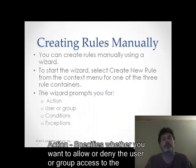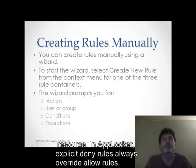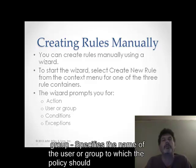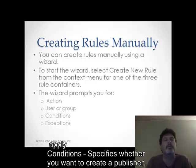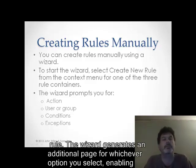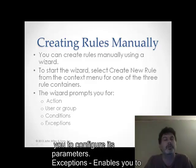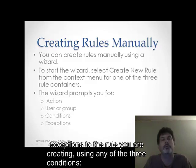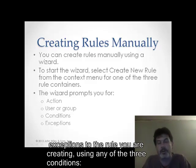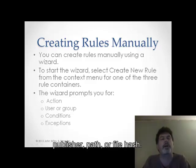You also have the ability to create rules manually using the Create Rules Manually wizard. To start that wizard, you simply select Create New Rule from the context menu for one of those three rule containers. A wizard is going to prompt you for a type of action to be associated with the rule, the user or group associated with that action, what conditions are going to prompt that action, and then whether there will be any exceptions that will not allow that action to take place.